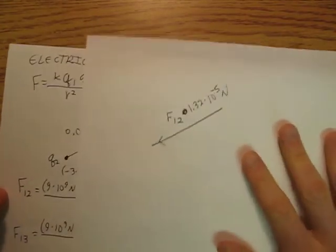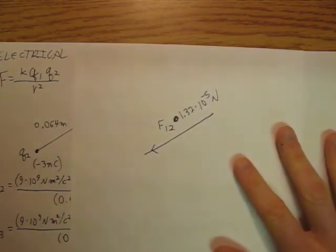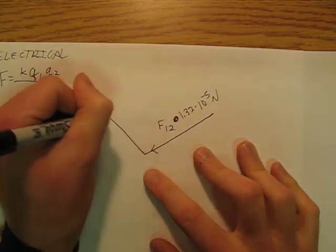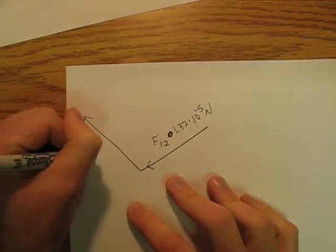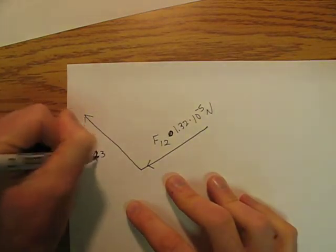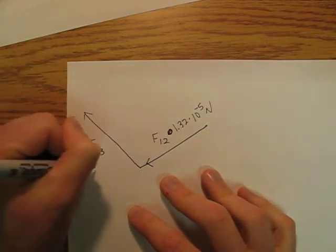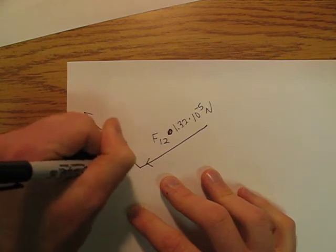So if I'm going to add tip to tail, what I'm going to do is I'm going to go like that, in that direction. And that's going to be my force F13. And it's going to have a value of 1.08 times 10 to the negative 5th Newtons.